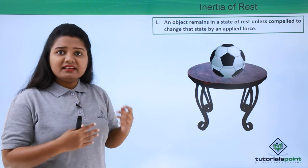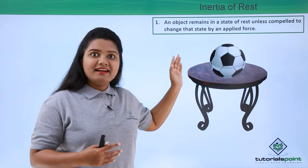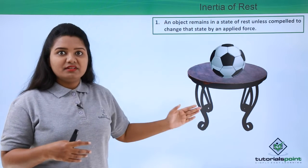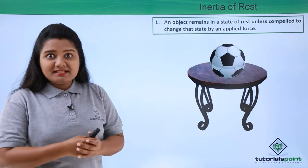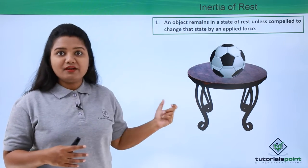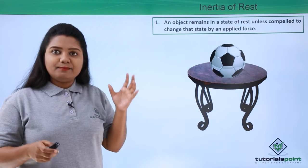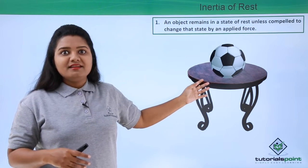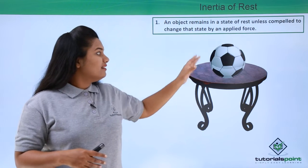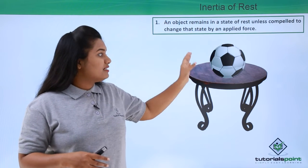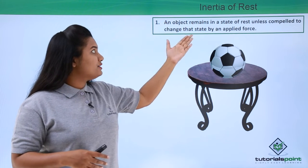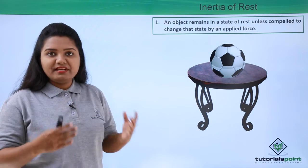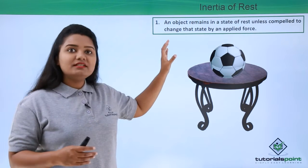Now suppose after 10 years I kick the football — it will move. This is because I applied a force by kicking it, and this externally applied force makes the football move. From this we can conclude that its tendency to remain at rest is the inertia of rest, and this state of rest is disturbed when an externally applied force acts on an object which is at rest.